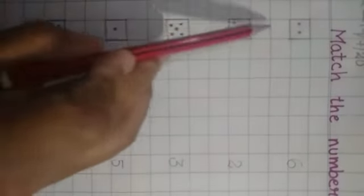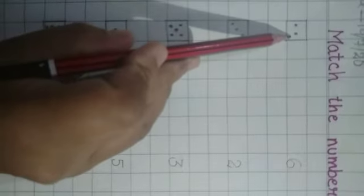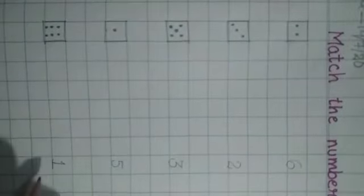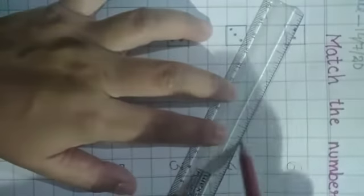Let's start. Here how many dots you can see? 1, 2. 2 dots are here. We will find where 2 is written? Here. So we will match this one with number 2.